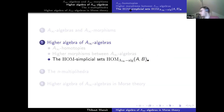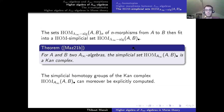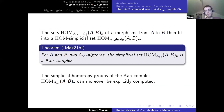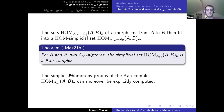For those more into homotopy theory: this collection of n-morphisms fits into a simplicial set between A-infinity algebras, and this simplicial set is in fact a Kan complex — that is, an infinity-category where one can also fill every outer horn. And a Kan complex has simplicial homotopy groups, which I can compute explicitly.